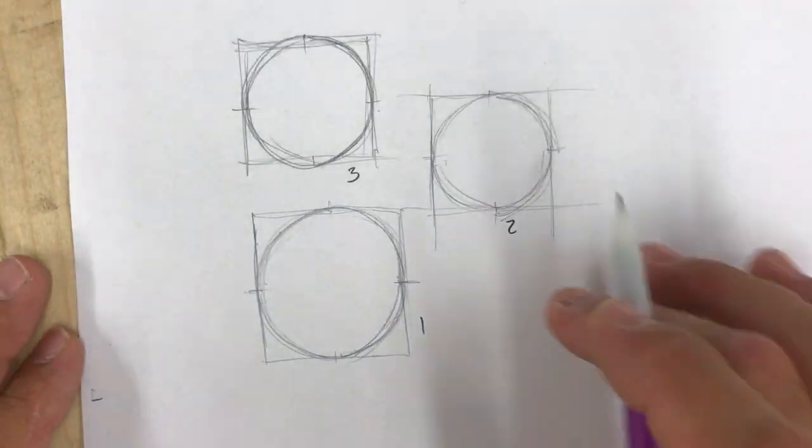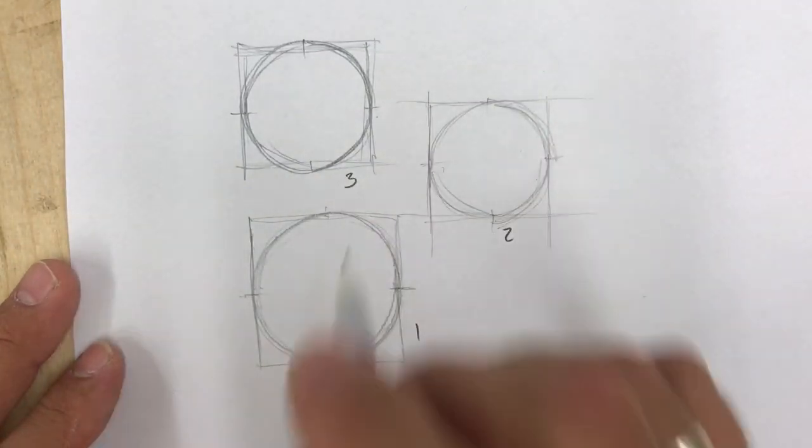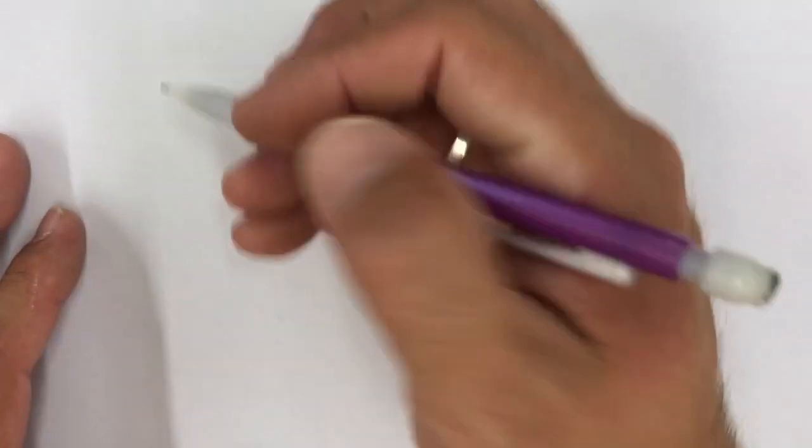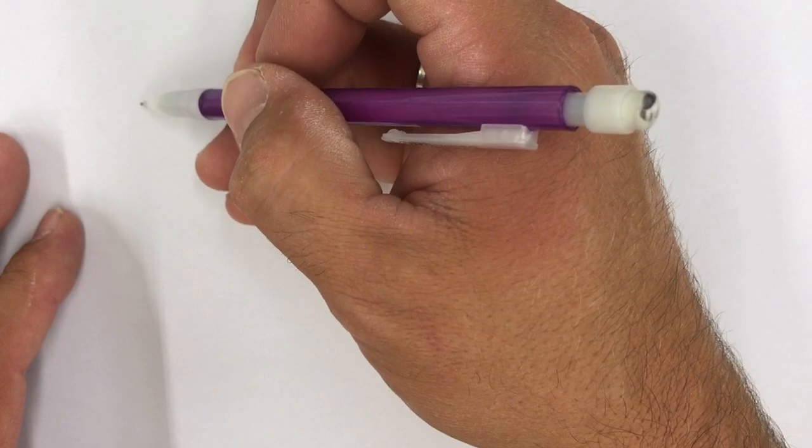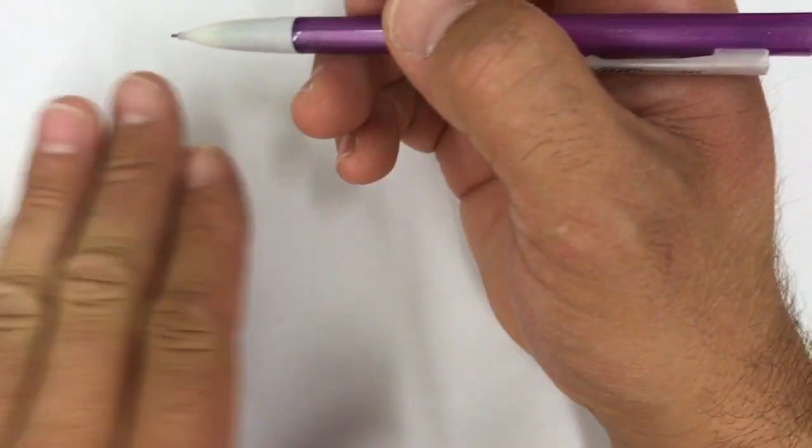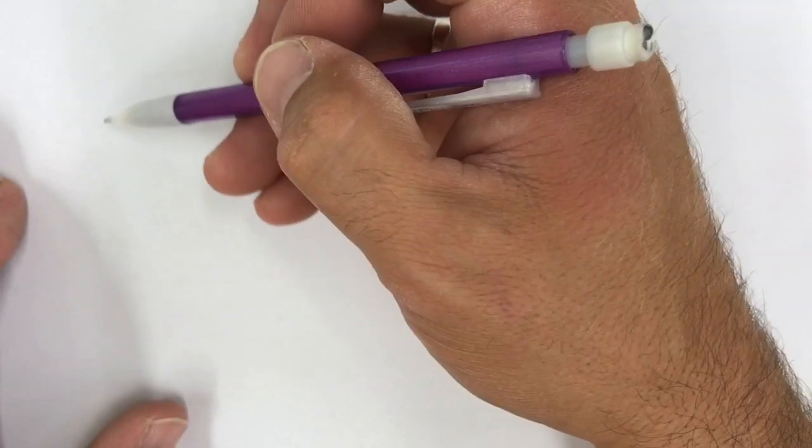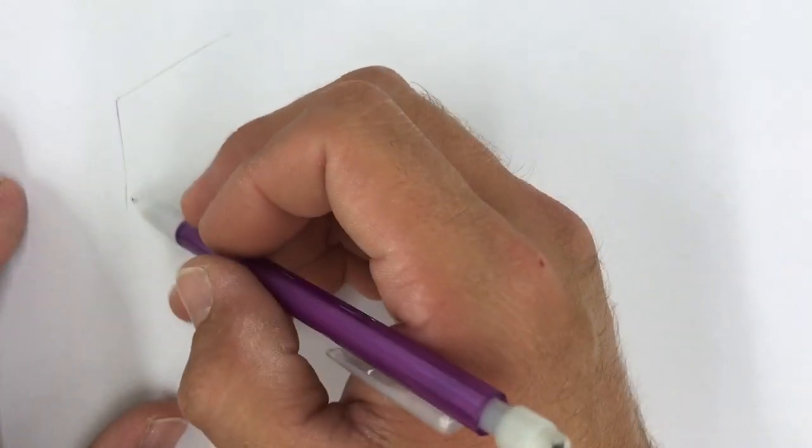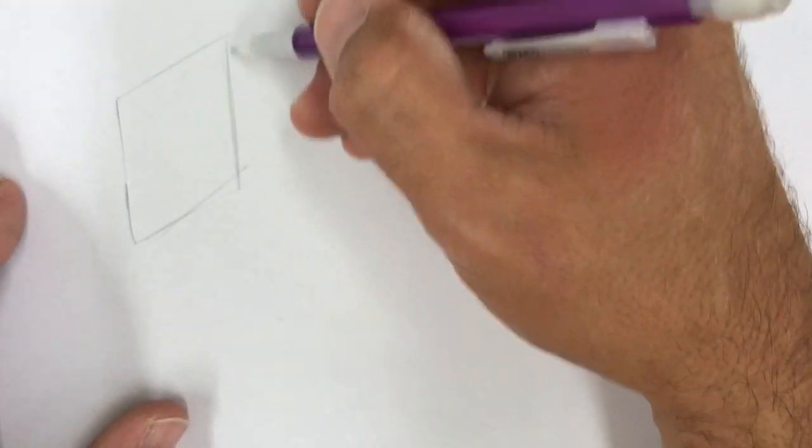So after we do that, now not all of our rings are going to be facing forward just like this. What we're going to do is we're going to practice, take that skill and we're going to tweak it. So instead of drawing a square flat on looking straight at it, we're going to draw a square at an angle.